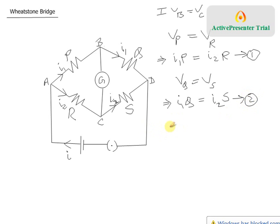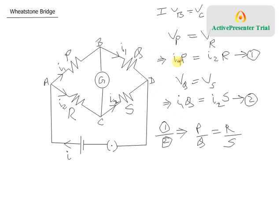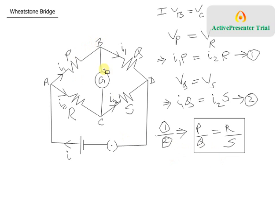If you divide equation 1 by equation 2, I1 and I2 cancel out, and you get P/Q = R/S. This gives you a relation between only the resistors P, Q, R, and S — the resistors must be in such a ratio that P/Q equals R/S, which automatically means no current is flowing between B and C.